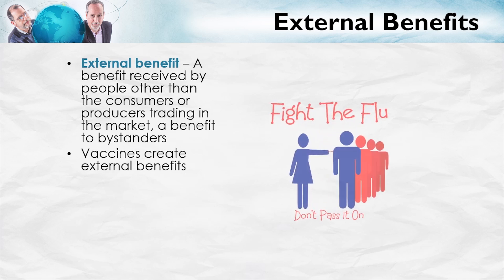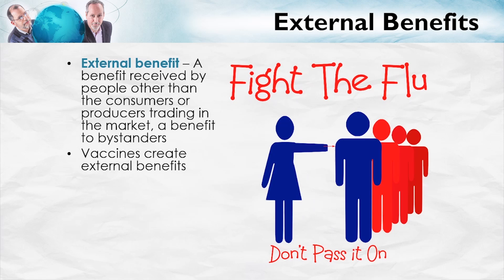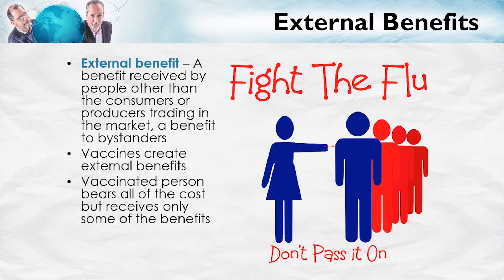Let me give you an example: a flu shot. Vaccines create external benefits because when one person gets a flu shot, that reduces not only the probability that they're going to get the flu, but the probability that other people will get the flu as well, because the vaccinated person is less likely to transmit the flu to others. In fact, when one person gets the flu shot, that reduces the expected number of people who get the flu by more than one. The problem is that the vaccinated person bears all of the cost — paying for the shot, the pinprick — but only receives some of the benefits. This means the social value of the flu shot is larger than the private value, and we get an undersupply of flu shots.